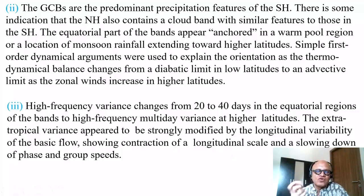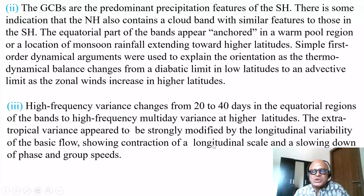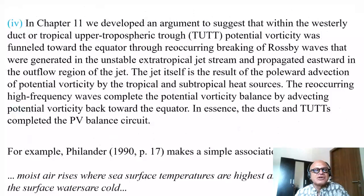The four-to-eight day variability in the ITCZ was examined. The extratropical variance appears to be strongly modified by longitudinal variability of the basic flow — the stretching we discussed shows contraction of longitudinal scale and slowing down of phase and group speeds, which comes down to trapping energy.